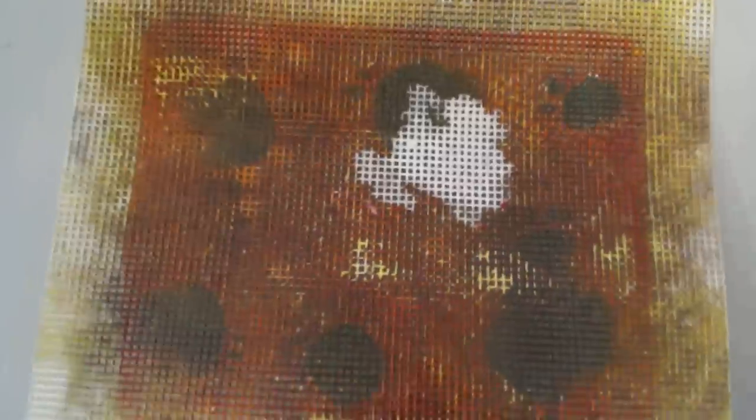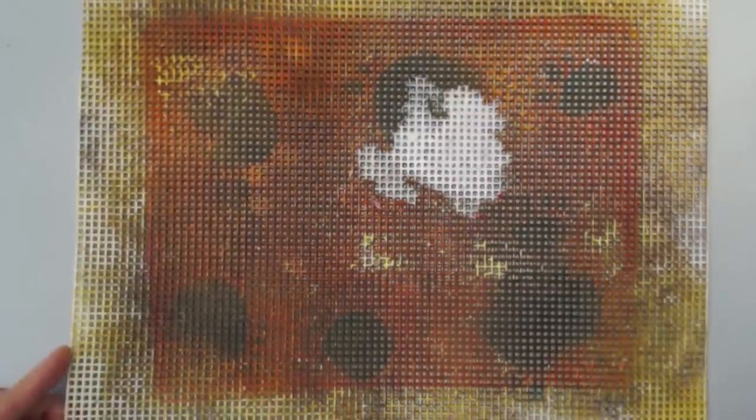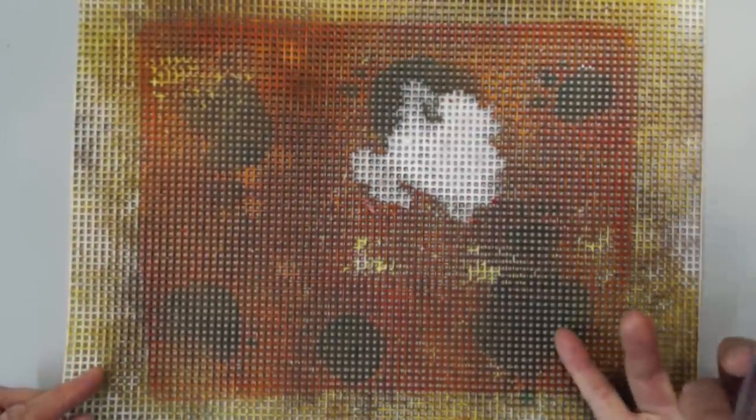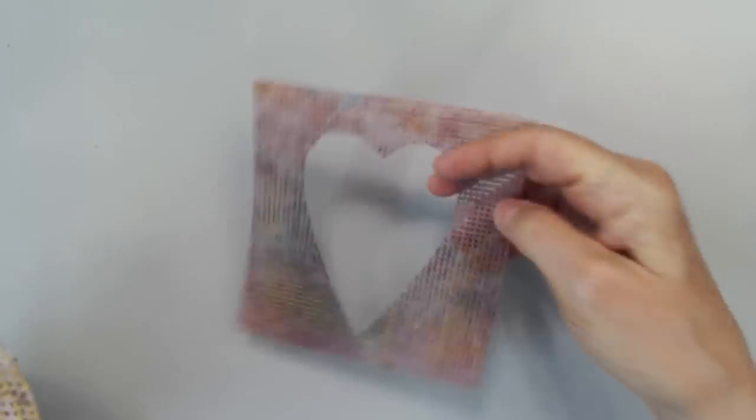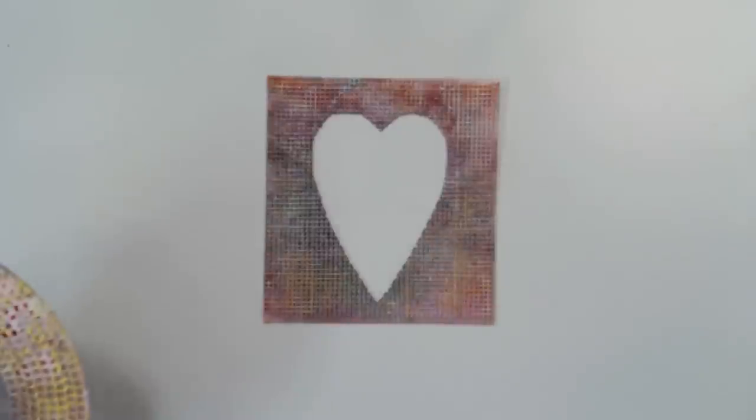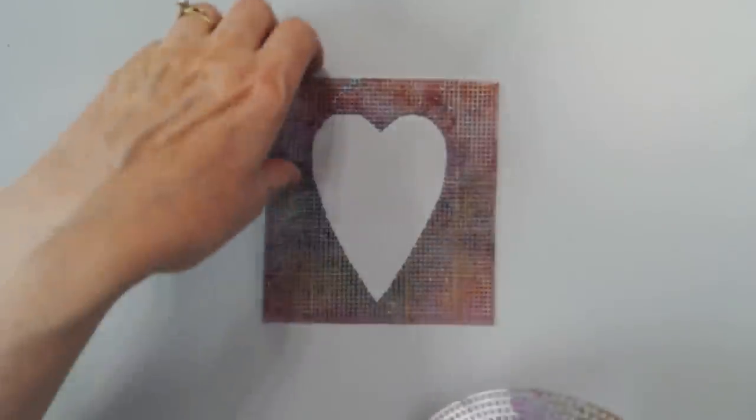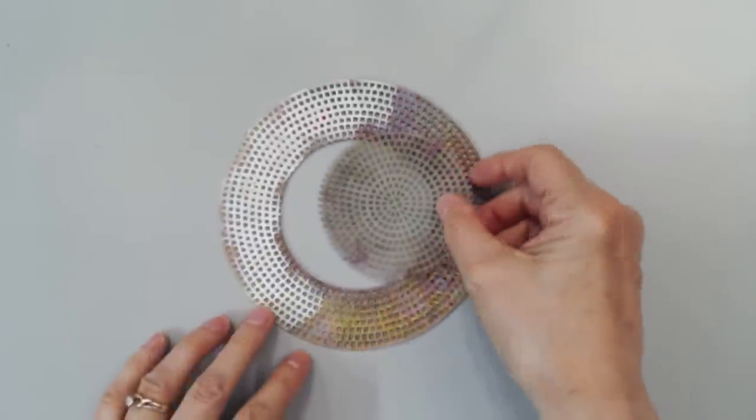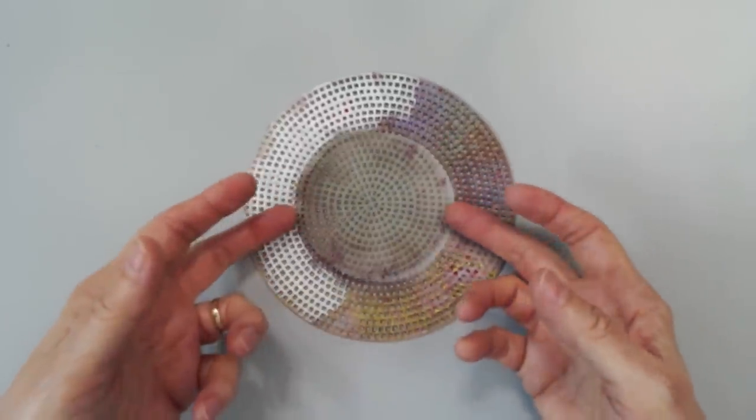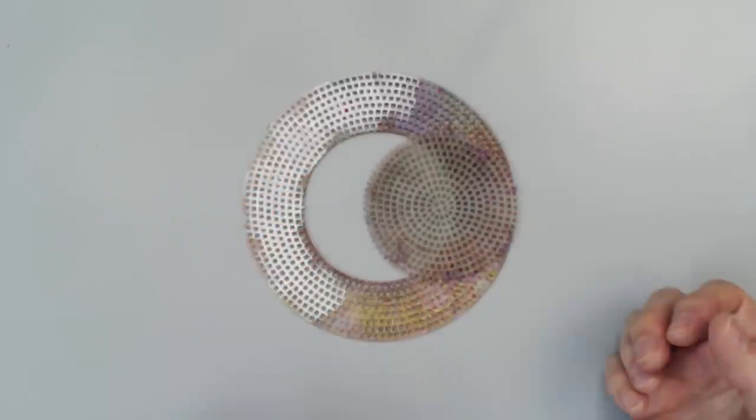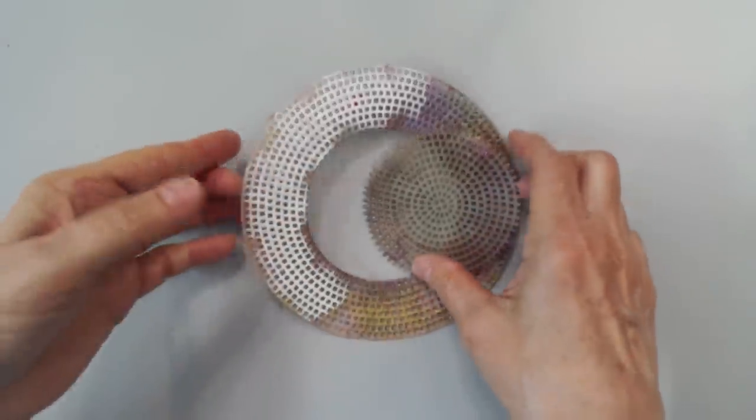Don't forget to check out sections in craft stores that are different than you might think that you'd find supplies in. This is plastic canvas found in the needlework section of a craft store. Also plastic canvas that I cut out a heart shape. Plastic canvas comes in different shapes. This one happened to be just a circle. I cut the circle out of the middle. So now I have a small circle and a ring.